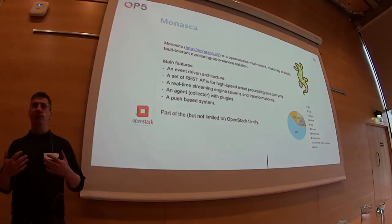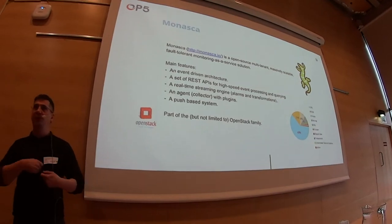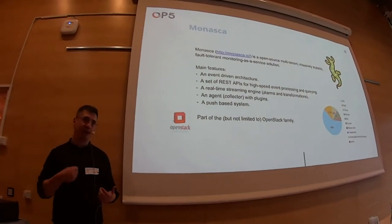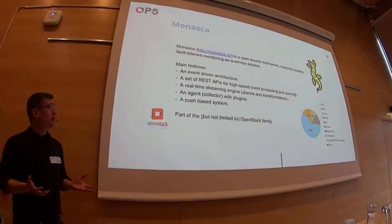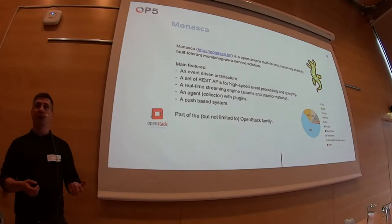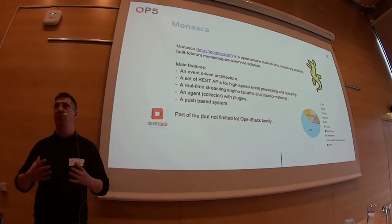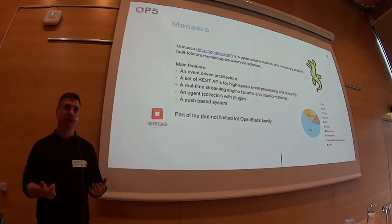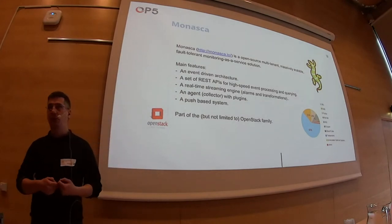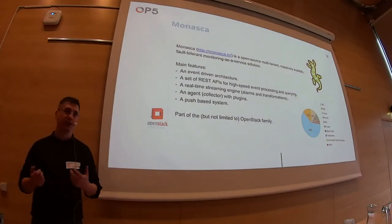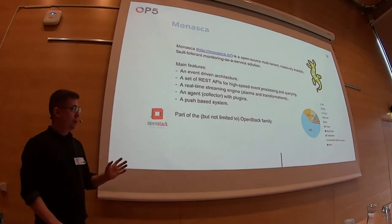Monasca also provides a way to transform your data from raw input — things coming from the machine — into something usable. In data science, you call that feature engineering. As part of the ecosystem, you've got something that collects information from those sources — in our case, the Monasca agent, which is a program with lots of different plugins. They can, for example, grab SNMP traps, or connect with StatsD and retrieve metrics with StatsD. All of this project is part of the OpenStack family.